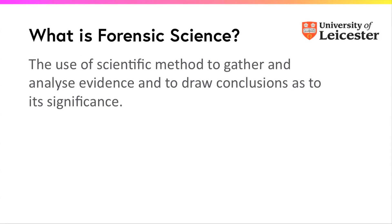Here's a definition of what forensic science is: essentially it's using scientific method to gather evidence together, maybe from a crime scene, to analyze it and then to draw some conclusions and interpretation about its significance in terms of the crime that's being committed.